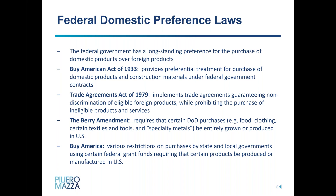So just as a general overview, federal domestic preference laws are a group of laws that show the federal government's longstanding preference for the purchase of domestic products over foreign products. The Buy American Act of 1933 generally provides preferential treatment for the purchase of domestic products and construction materials under federal government contracts. The Trade Agreements Act of 1979 implements trade agreements guaranteeing non-discrimination of eligible foreign products while prohibiting the purchase of ineligible products and services.